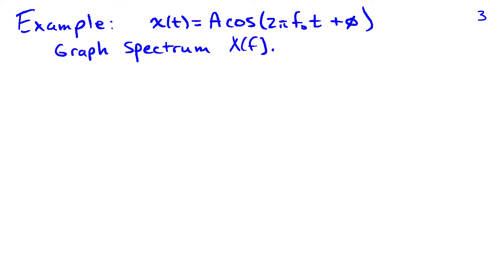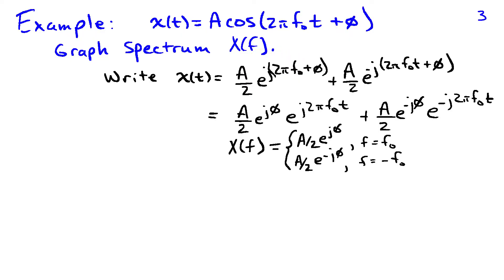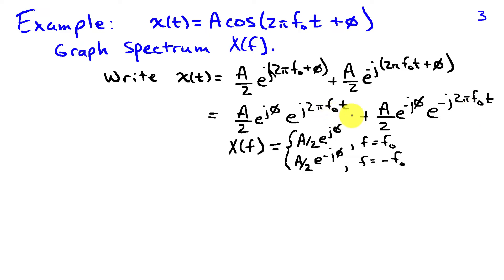We're going to do a simple example. Let x(t) = a·cos(2πf₀t + φ). To graph the spectrum X(f), we decompose x(t) using the Euler expansion as (a/2)·e^(j(2πf₀t + φ)) plus (a/2)·e^(−j(2πf₀t + φ)). Factoring out the phase terms gives (a/2)·e^(jφ)·e^(j2πf₀t) plus (a/2)·e^(−jφ)·e^(−j2πf₀t). There are two terms at different frequencies: one at f₀ and one at −f₀. At f₀, the complex amplitude is (a/2)·e^(jφ), and at −f₀ it is (a/2)·e^(−jφ).